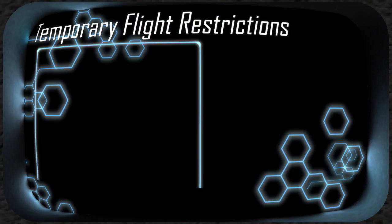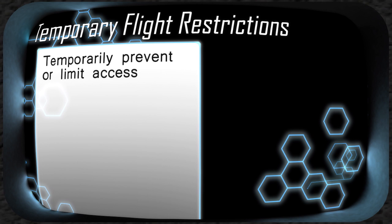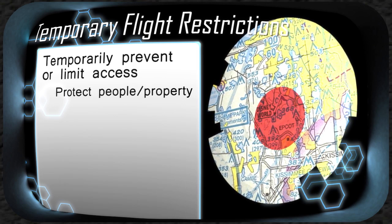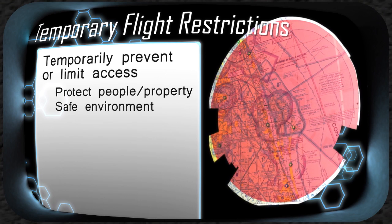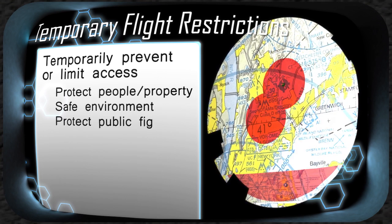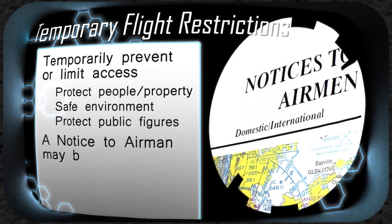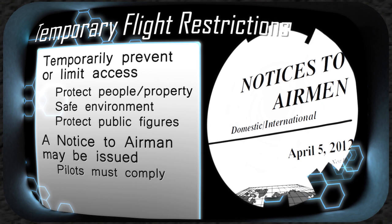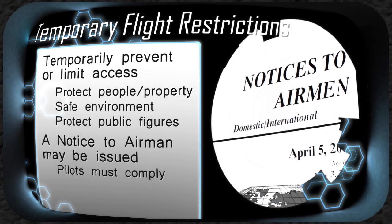Temporary flight restrictions, or TFRs, are short-term blocks of airspace used to temporarily prevent or limit non-participating aircraft from entering that area. These could be used to protect people or property in the air or on the surface from specific hazards or situations, or to provide a safe environment for things such as disaster relief or shuttle launches, or to protect the President, Vice President, or any other public figure. Depending on the impact of the TFR, a notice to airmen or NOTAM may be issued to alert pilots that a TFR is in effect. Pilots are responsible for being aware of and complying with any TFRs that are or will be in effect during their flights.